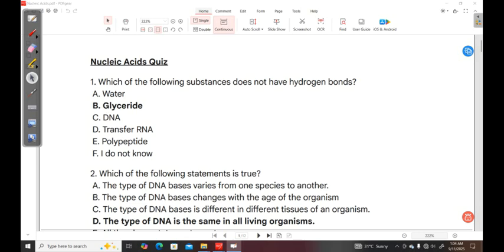So the first question reads, which of the following substances does not have hydrogen bonds? A. Water. B. Glyceride. C. DNA. D. Transfer RNA. E. Polypeptide. F. I do not know. So the correct answer here is glyceride.